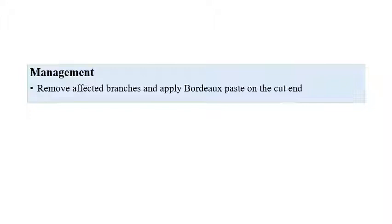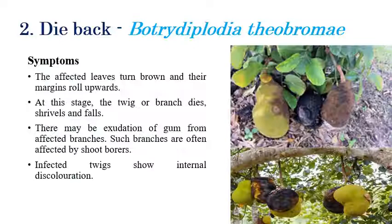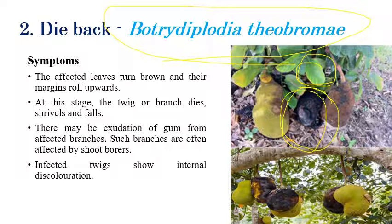The second disease is dieback, which is caused by Botryodiplodia theobromae. On the affected leaves, brown color discoloration and marginal rolling can be seen. However, the major damage is caused to fruits, where a blackish to brown color fungal growth can be clearly observed.